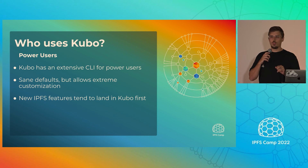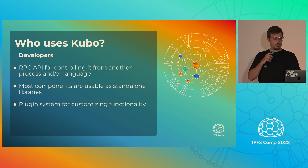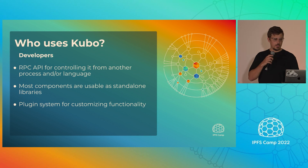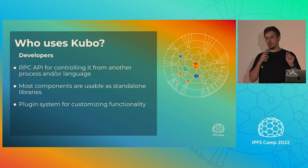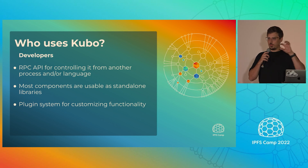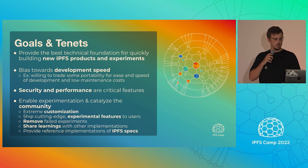Those bleeding-edge features can be trade-offs — they may or may not work out in the long run. There's also an RPC API, so lots of other programming languages have implemented this API, meaning you can work with IPFS from your language of choice without reimplementing everything from scratch. There's also a plugin system that a lot of people use — for example, to implement custom datastores. If you want to store your IPFS node data somewhere like a Postgres database or Amazon S3, you just implement a simple interface, plug it into Kubo, and all your data is stored there.